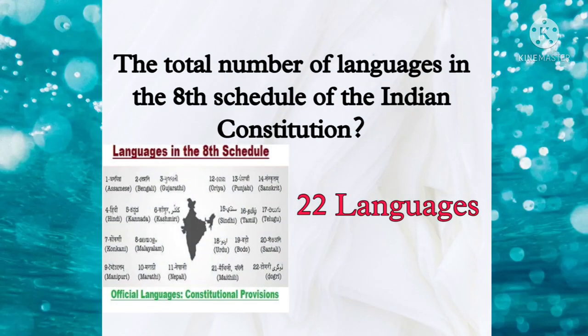Now let's get started. The first question is: what is the total number of languages in the 8th Schedule of the Indian Constitution? The 8th Schedule to the Constitution consists of 22 languages. The right answer is 22.